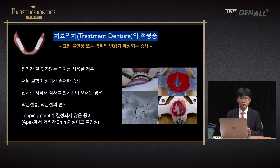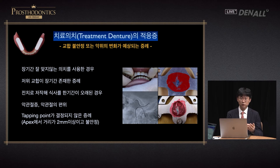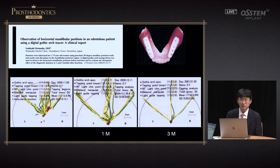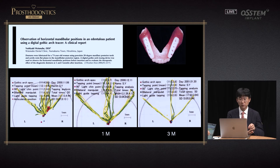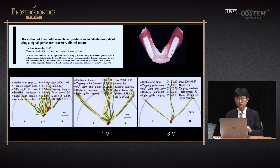A treatment denture can be used for senior patients when we are not sure where the stable point would be clinically. A treatment denture can be fabricated in cases where changes are expected — for example, a patient chewing using a very anterior position. Based on Dr. Watanabe's case report, if a treatment denture is used for about a month in a patient with very unstable tapping, the chewing position would become consistent with the position we are lightly guiding.